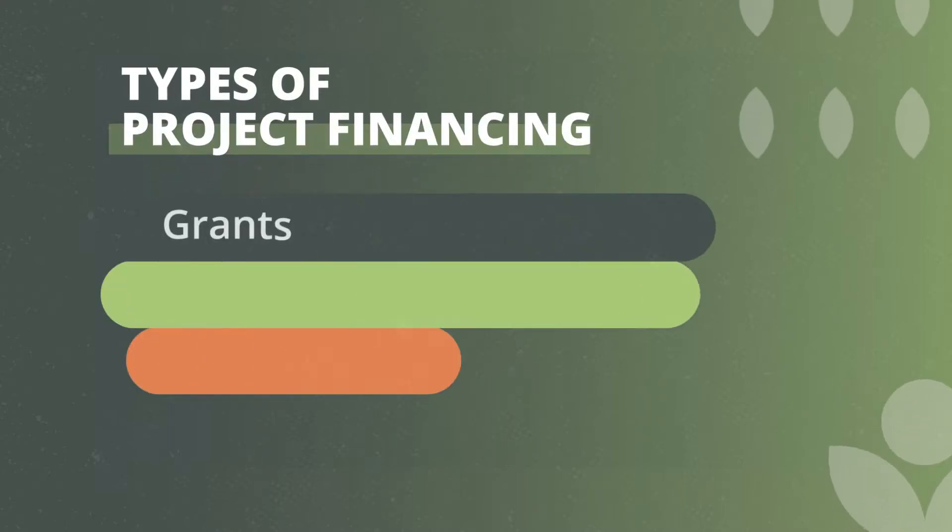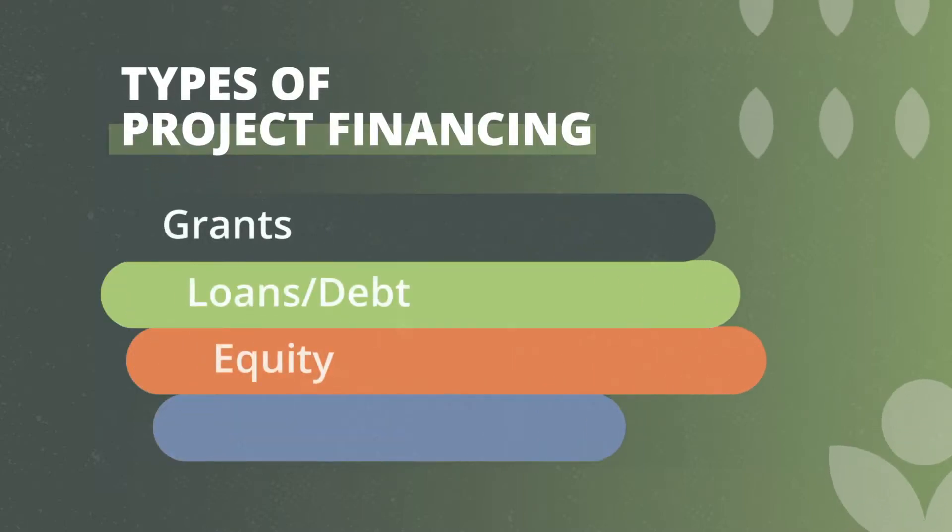The types of project financing you could use to raise money to launch your project or program can be placed into four main categories. These categories are grants, loans, equity and insurance.